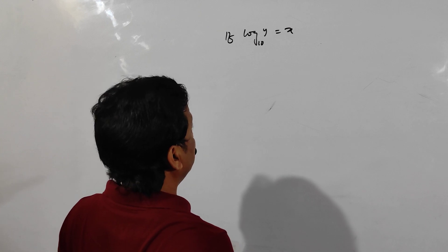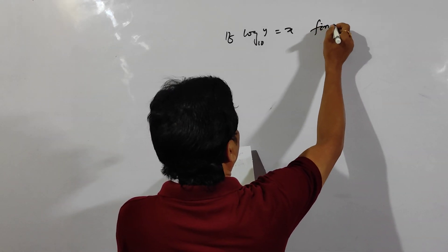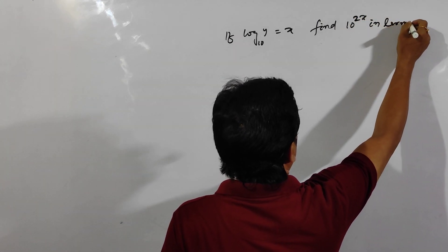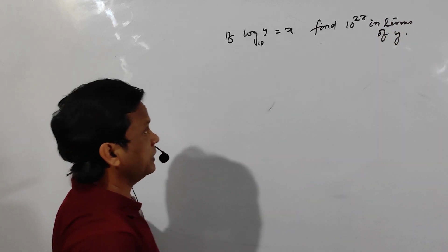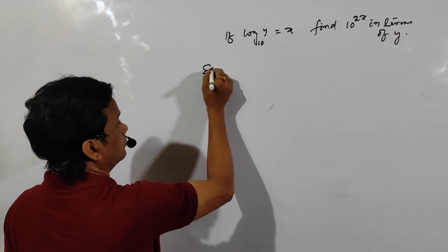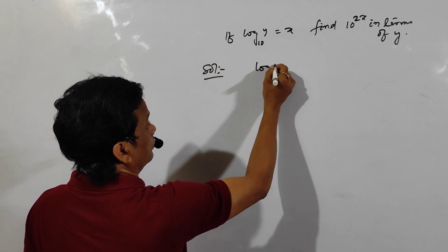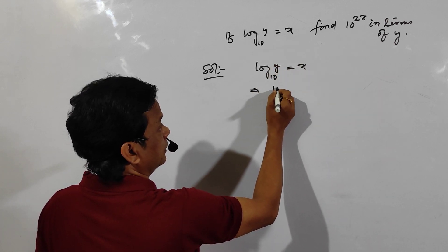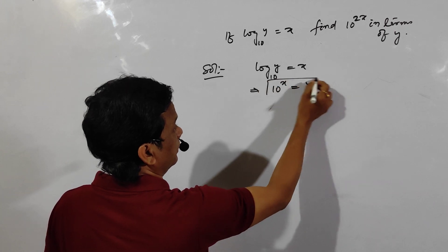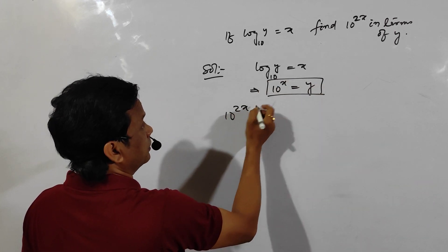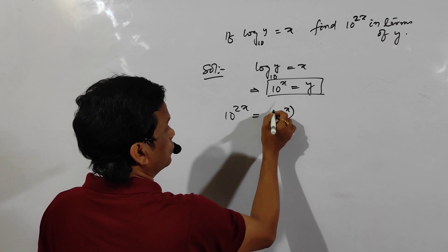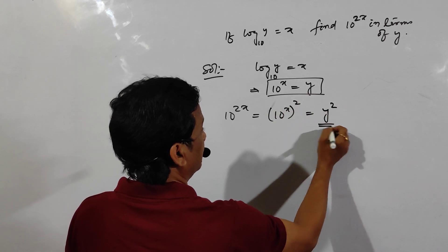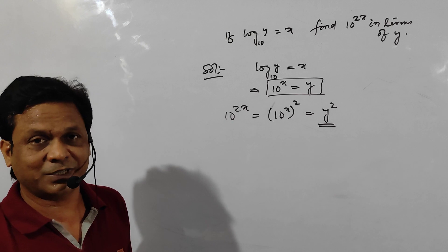If log of y to the base 10 is equal to x, find 10^(2x) in terms of y. From the definition, log_10(y) = x means 10^x = y. Now 10^(2x) = (10^x)², and since 10^x = y, the answer is y². The value of 10^(2x) is y squared.